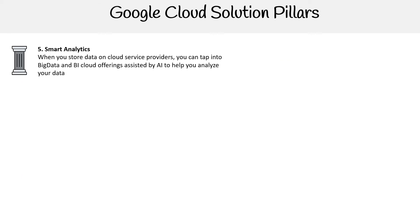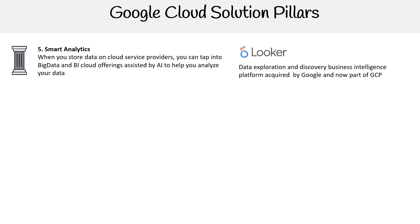For number five, we have smart analytics. When you store data on cloud service providers, you can tap into big data and business intelligence cloud offerings assisted by AI to help you analyze your data. For Google, there's Looker — a data exploration, discovery, and business intelligence platform acquired by Google, and it is now part of GCP.